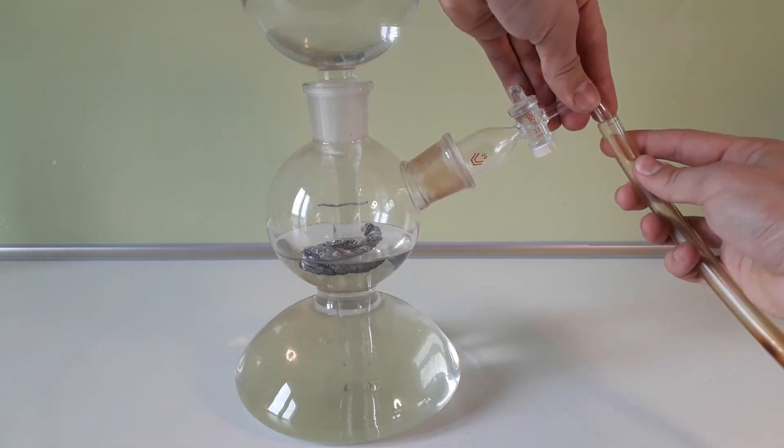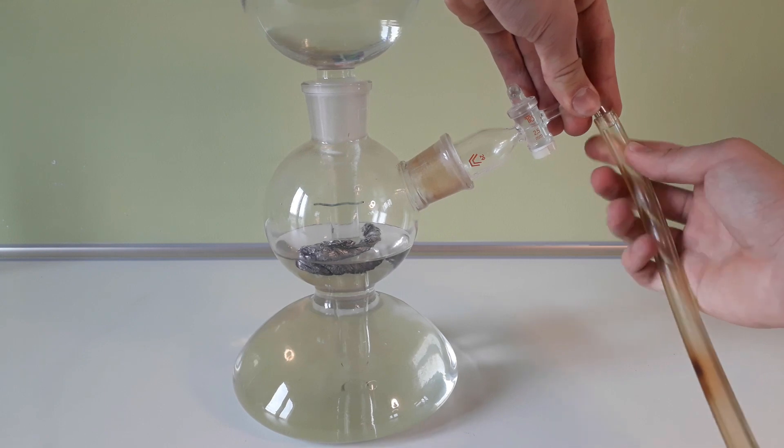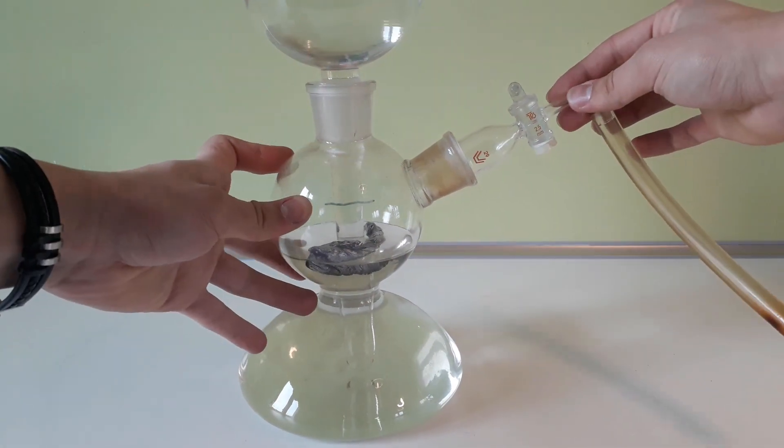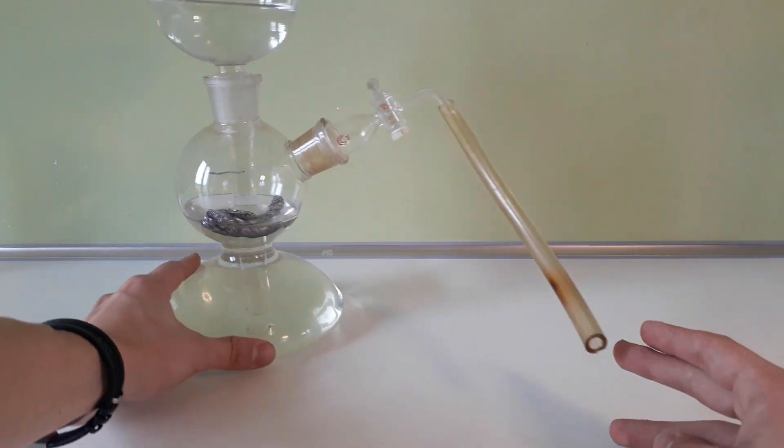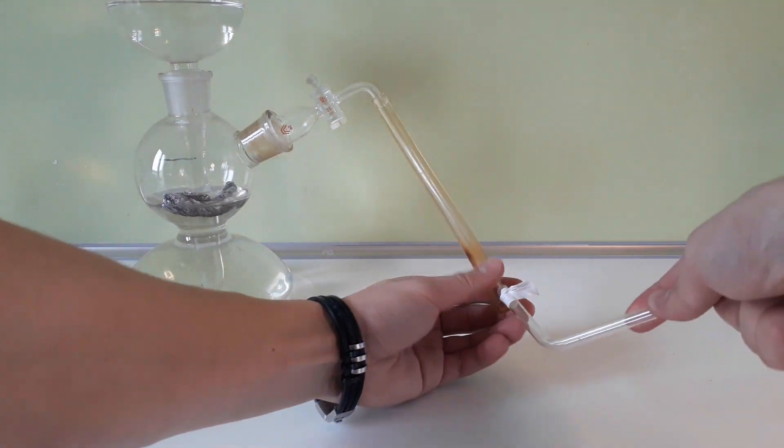When I felt like I had enough gas generated, I attached the rubber tube to the stopcock. I didn't want to burn the gas directly from the tube, so I tried to attach another piece of tubing made of glass.